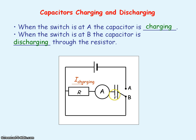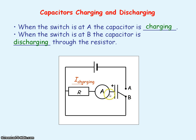Because this side of the capacitor is connected to the positive terminal of the battery, this side is positively charged and the other side is negatively charged. We know current flows from positive to negative, so the current will be flowing in the opposite direction through the ammeter and resistor compared to the current while the capacitor was charging.